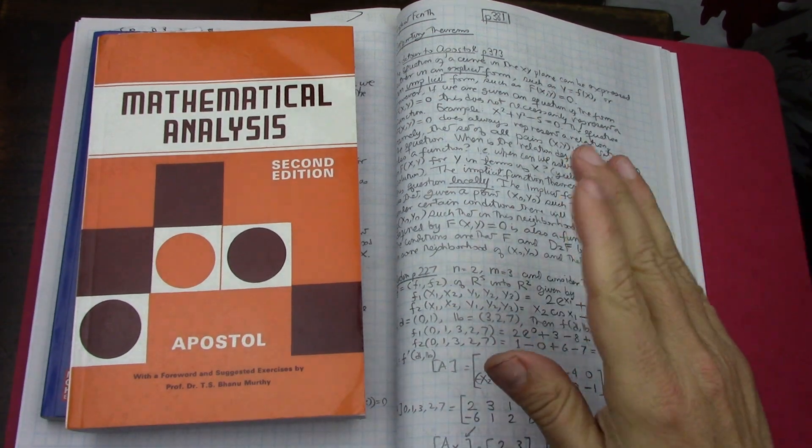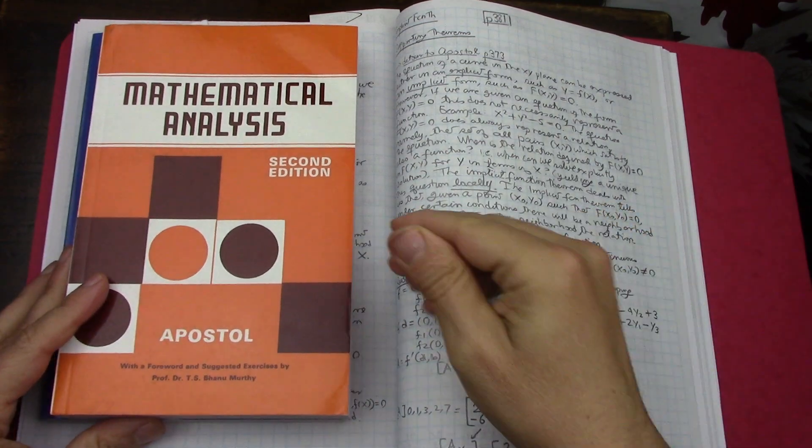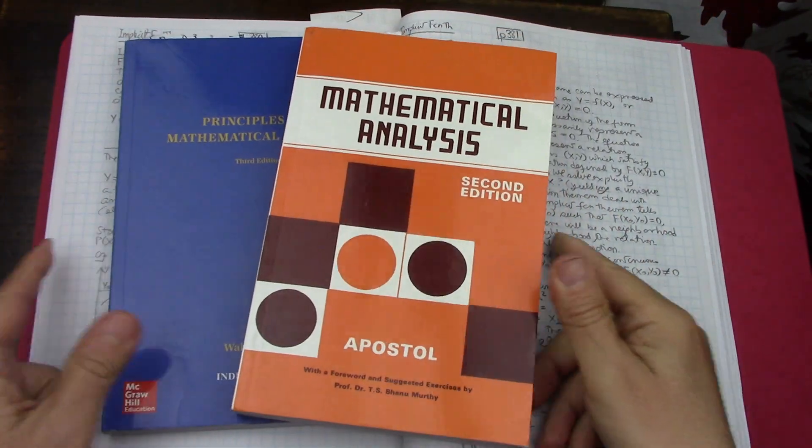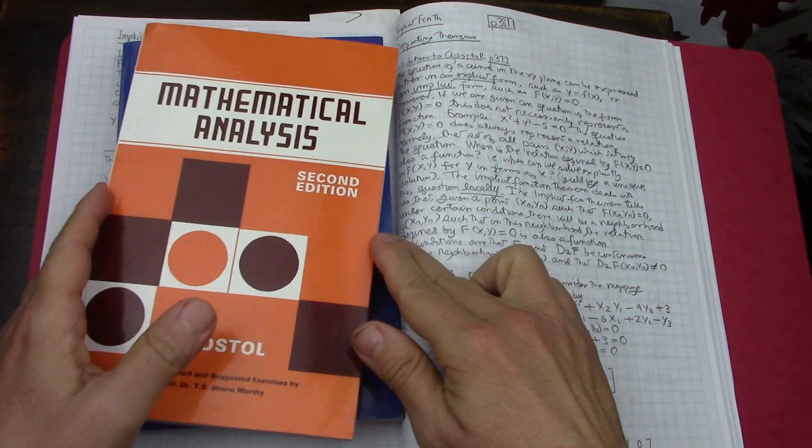So what about the implicit function theorem? Going a little deep into this particular theorem. Rudin and Apostol, which are really the more advanced mathematical analysis books that I have, really came in handy.